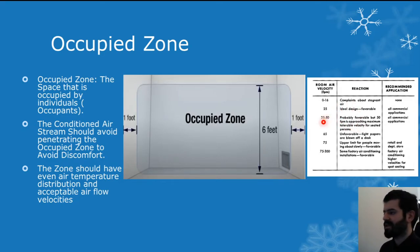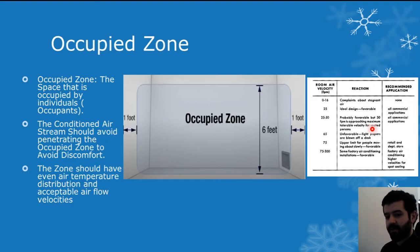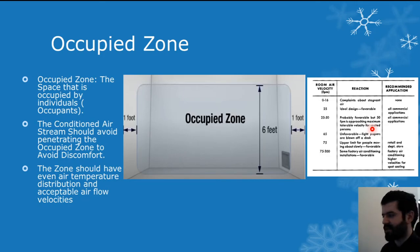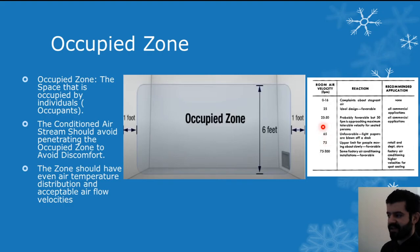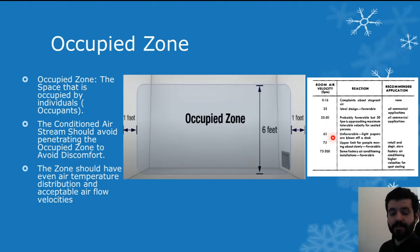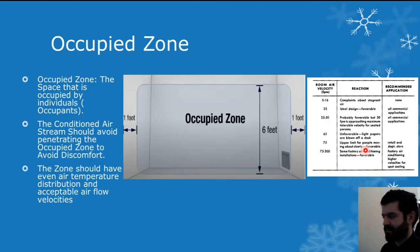The 25 to 50 FPM range represents optimum comfort levels. Approaching 50 FPM means we're nearing the maximum acceptable velocity for a seated person — still acceptable, but borderline. At 65 FPM, conditions become unfavorable: light papers will be blown off a desk, making it uncomfortable and not recommended for office environments. Similarly, 75 FPM is the upper limit for people moving about slowly, which is only favorable when occupants are in motion.